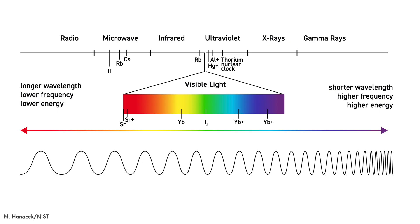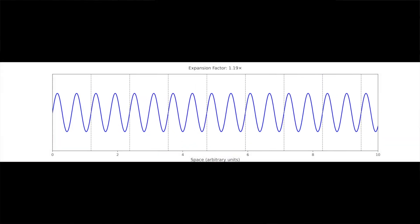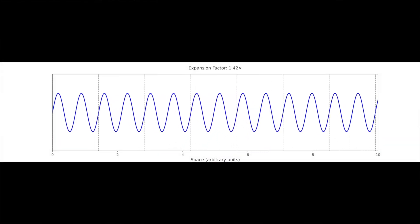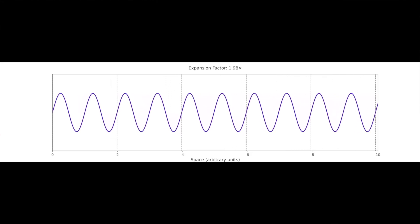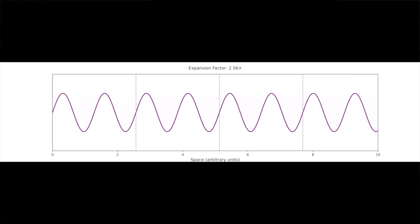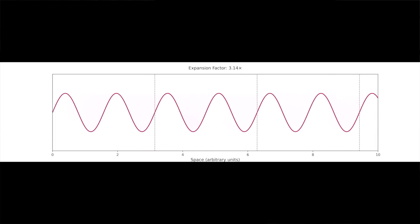The light we see is sort of in the middle of these two extremes, with wavelengths around 500 nanometers. Now think about an electromagnetic wave travelling through space, a space that stretches. What happens to the wave? Well, it stretches too, and it stretches in direct proportion to the amount that space expands.